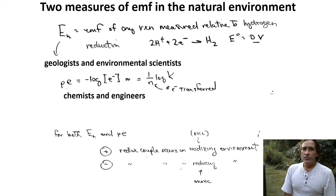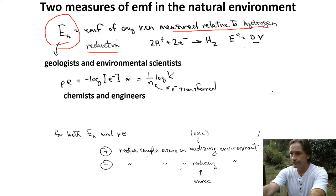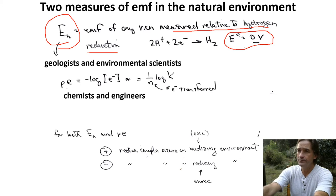There are two measures of electromotive force in the natural environment. Geologists and environmental scientists use EH, and these measurements are relative to the hydrogen reduction reaction, which we discussed previously when we looked at the tables.